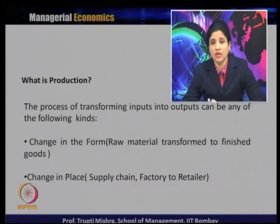Output is generally produced in the plant or factory, but until it reaches the retailer, it is not available for individual consumption. So the second form of transformation — change in place — is also part of the production activity. The process of transformation involves two kinds of changes: change in form (raw material to final goods) and change in place (supply chain, factory to retailer), which makes the products consumable.